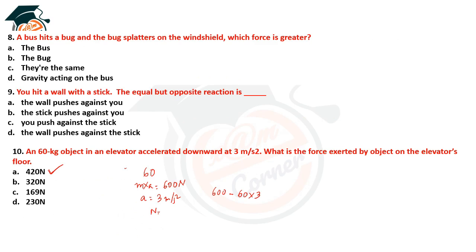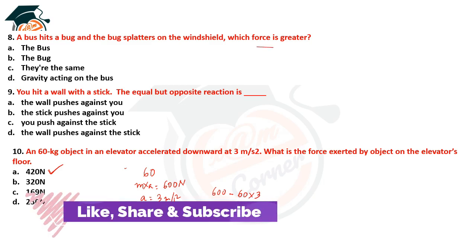A bus hits a bug and the bug spatters on the windshield — whose force is greater? This is based on Newton's third law of motion. The mass of the bug is less, so its acceleration is greater (since mass and acceleration are inversely proportional), but the forces are equal and opposite — the same force acts on both.